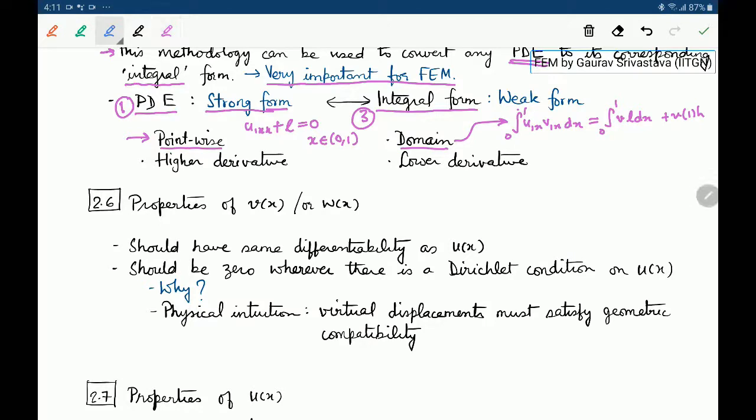Second thing you will notice is that in this you get higher derivatives of the field u(x). In this case a double derivative is appearing whereas in this only single derivatives are appearing. So a higher derivative appears in these PDEs and a lower derivative appears for the integral forms. Hence the requirements on u(x) are weaker for the integral form because in this case u(x) needs to be once differentiable whereas here u(x) needs to be twice differentiable.